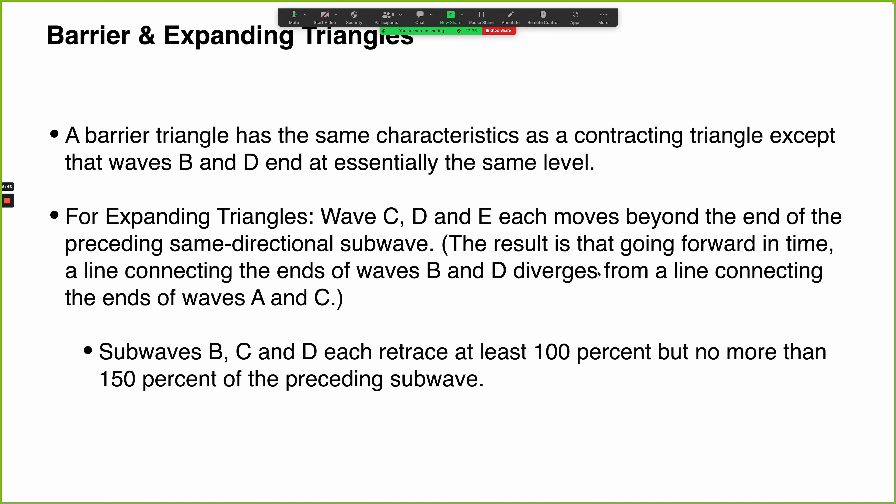Barrier and expanding triangles have the same characteristics as a contracting triangle for the most part, except that waves B and D are essentially at the same level. They don't have to be identical to the tick — there can be some allowance — but if there is a significant variance between waves B and D, you might want to consider an alternative count. For expanding triangles, waves C, D, and E each move beyond the end of the preceding same-directional sub-wave, so the trend lines diverge going forward in time instead of converging like in a contracting triangle.